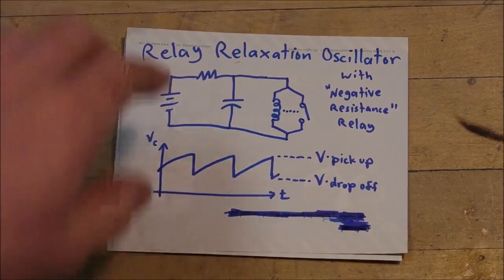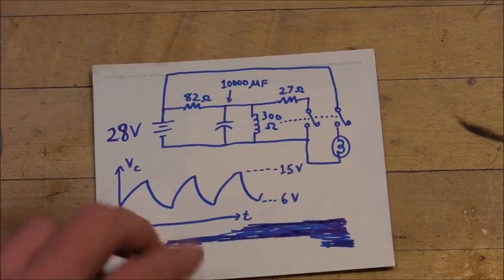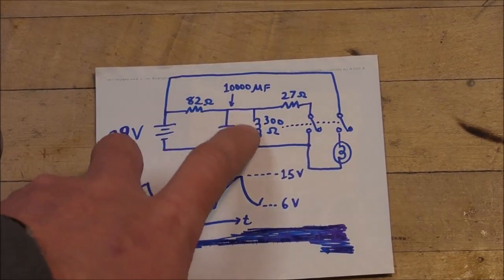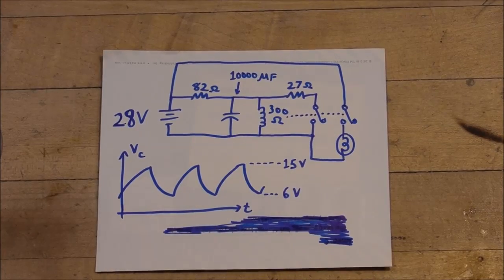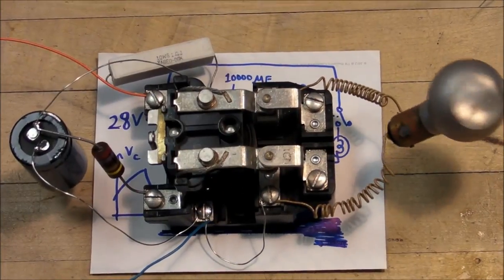In between the pickup voltage and the drop off voltage. And so here's the circuit that I built, about 26 to 28 volts and all these other value parts here you can see. And this is what it looks like.